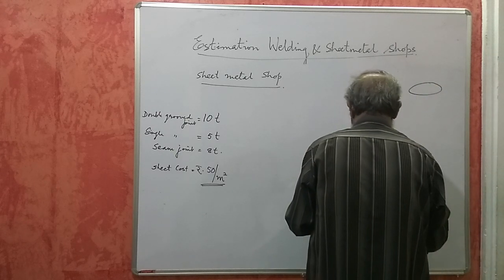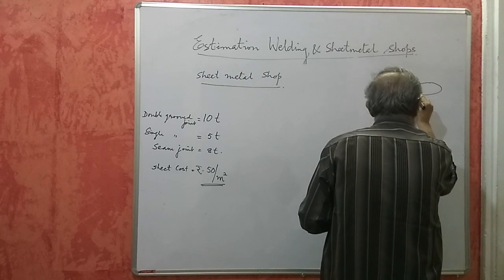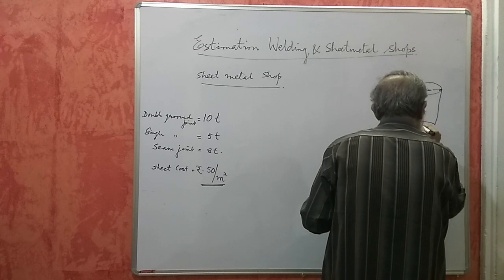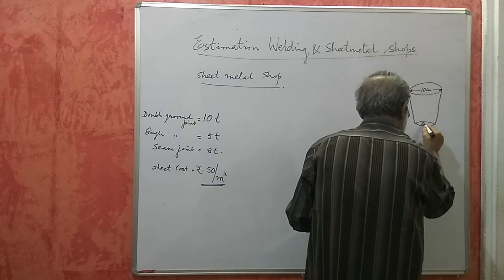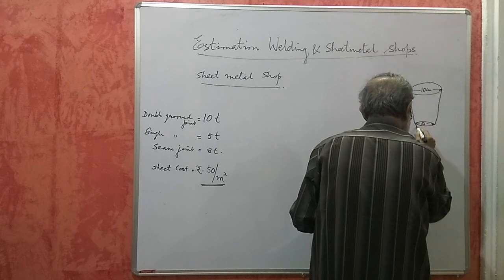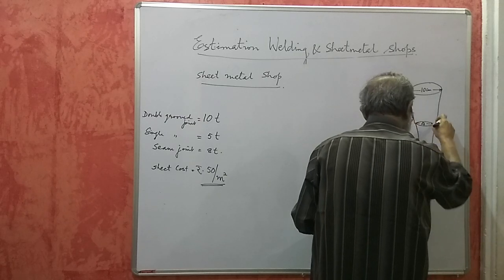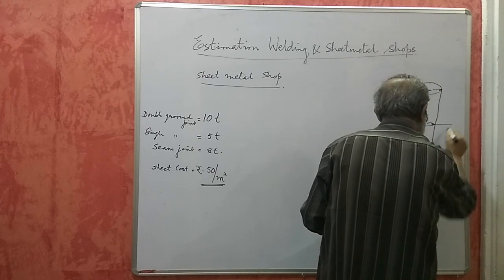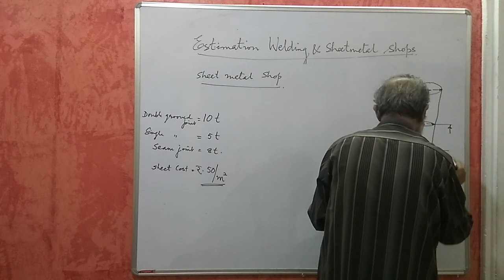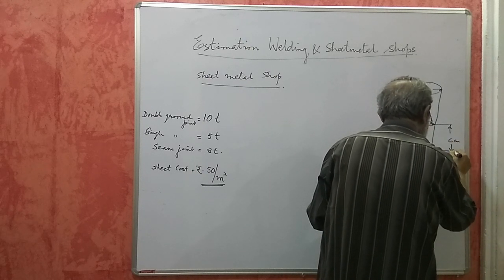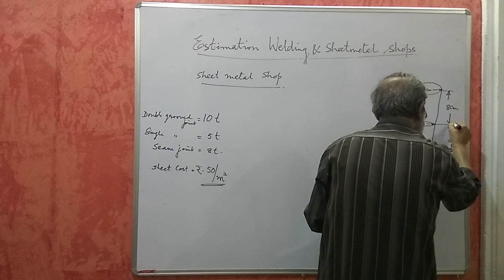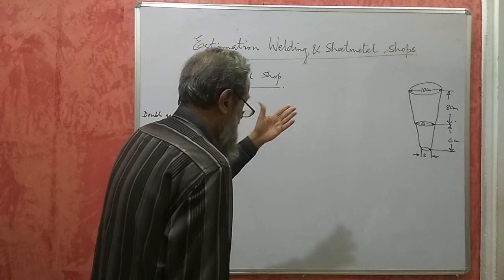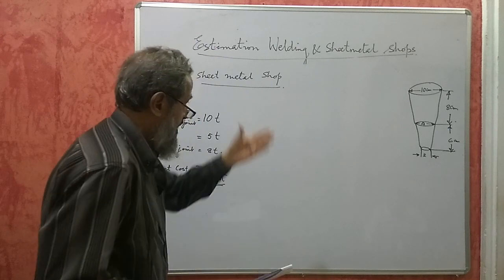The funnel has an upper diameter of 10 cm, a middle diameter of 4 cm, and a lower diameter of 2 cm. The upper section height is 8 cm and the lower section height is 6 cm. From this sketch we have to find the area of sheet required and then its cost. The funnel has two parts — an upper part and a lower part — and we must draw the development of each.